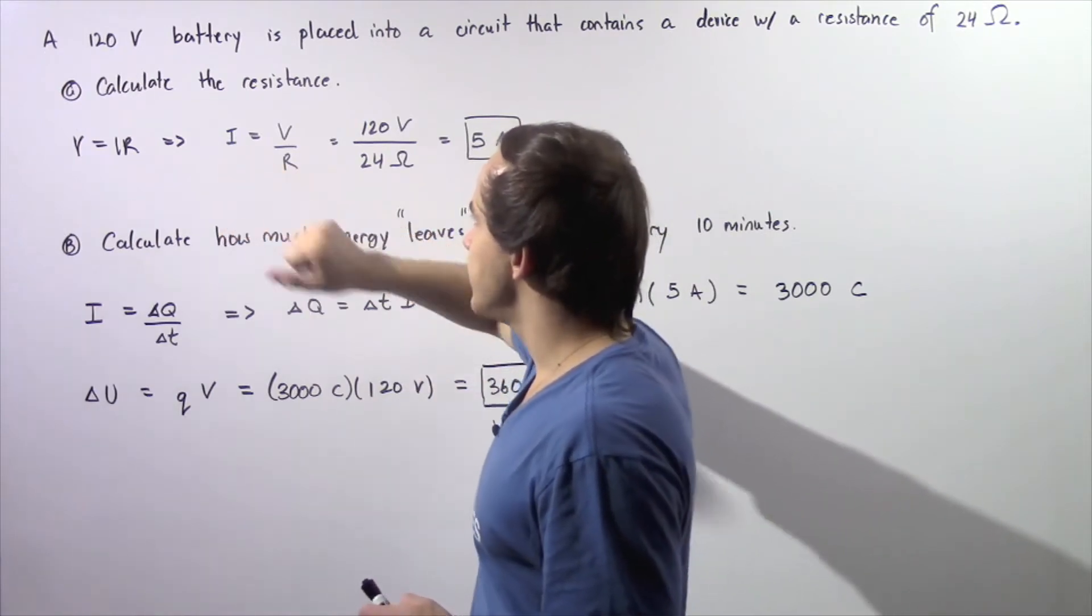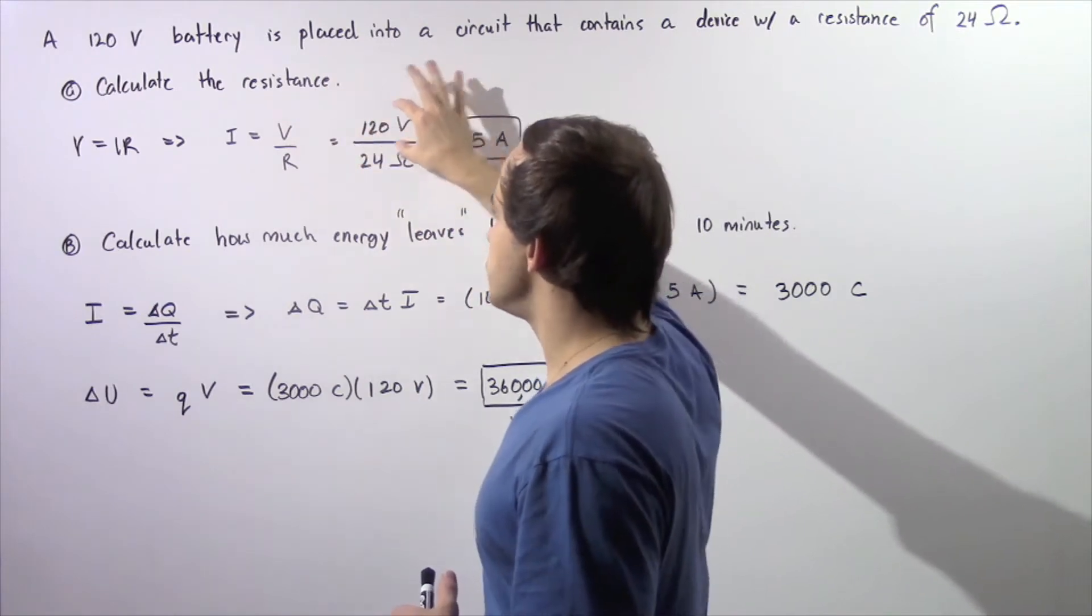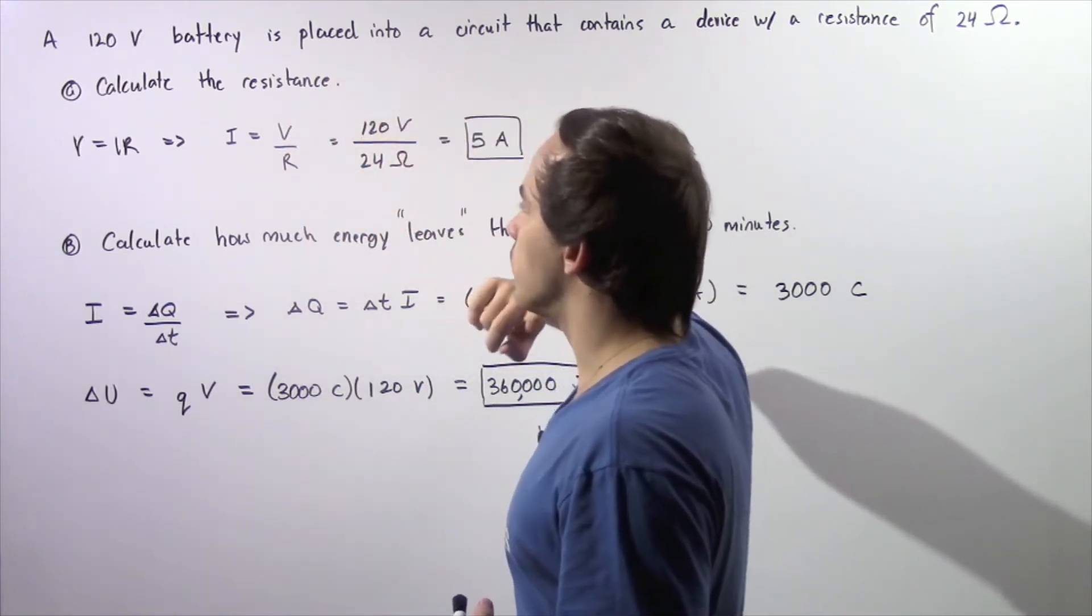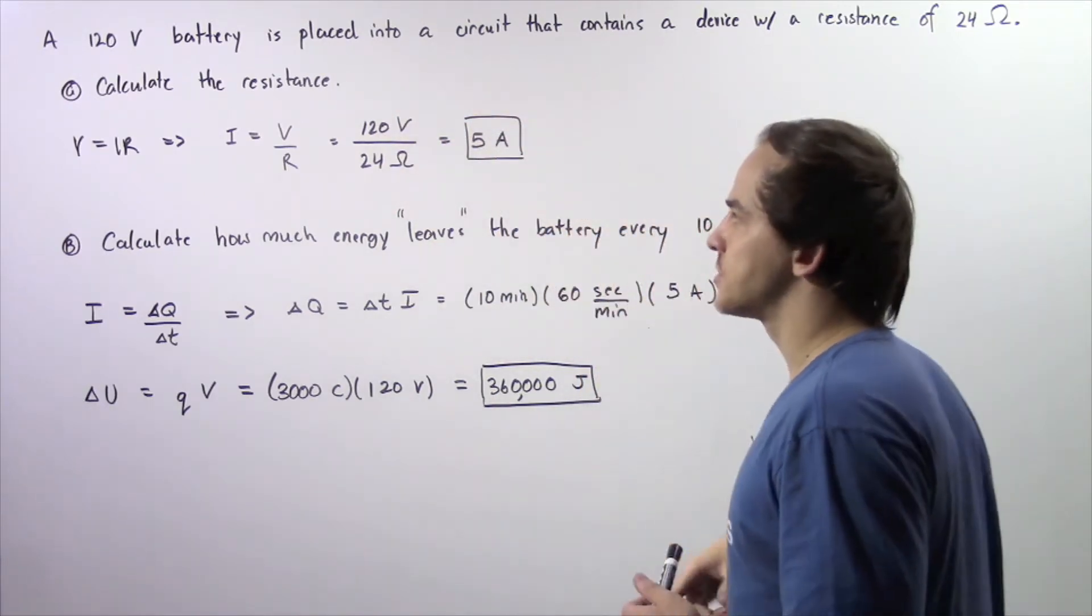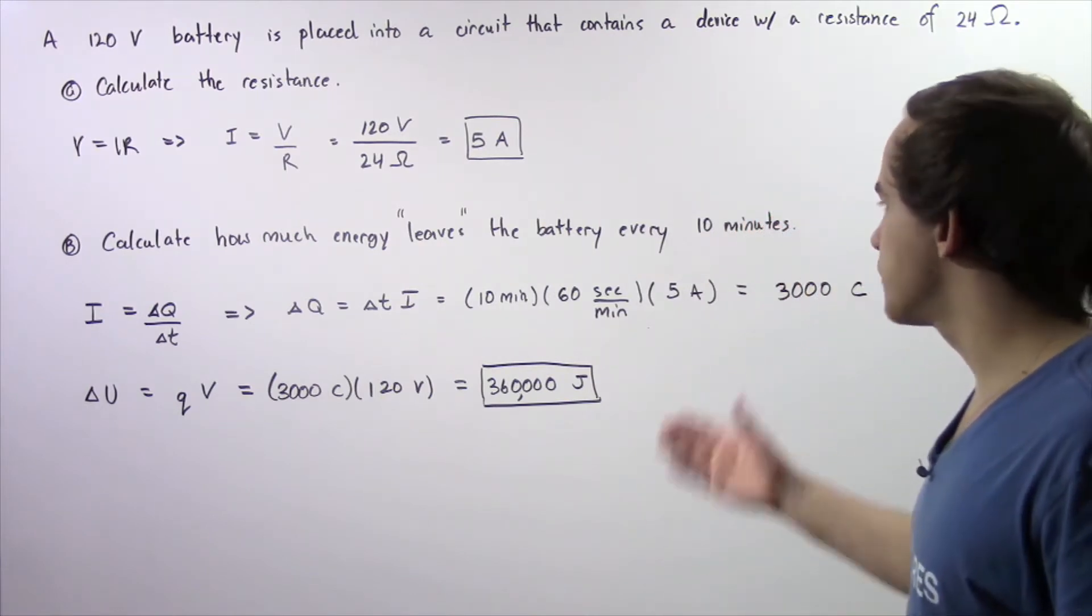The electric current is equal to the voltage divided by the resistance. The voltage is 120 volt, resistance is 24 ohms. Divide these two numbers, we get 5 amps. So our electric current within our electric circuit is 5 amps.